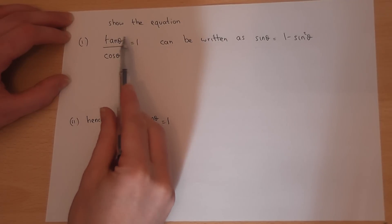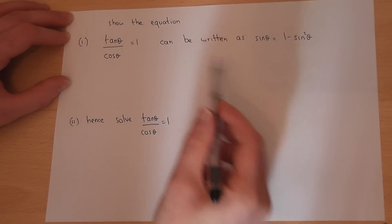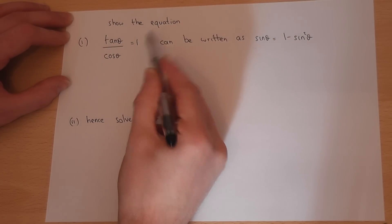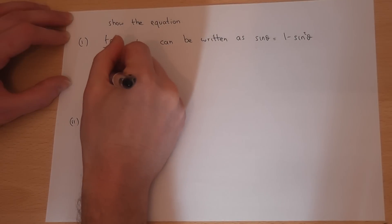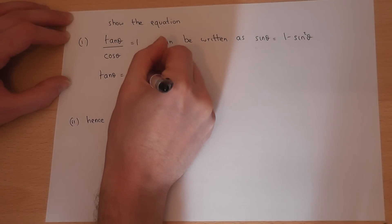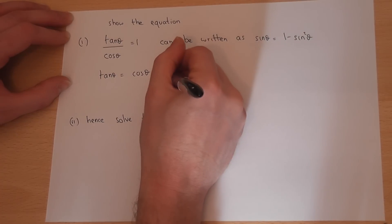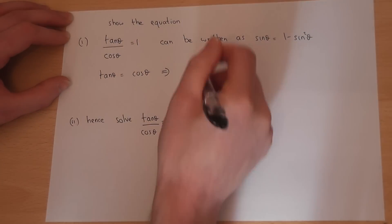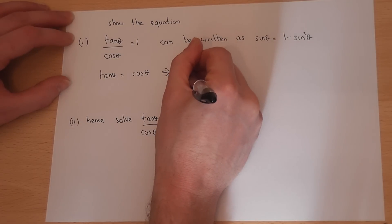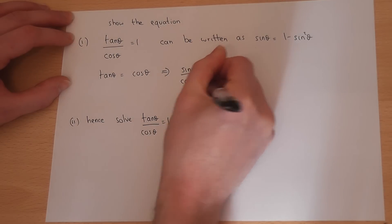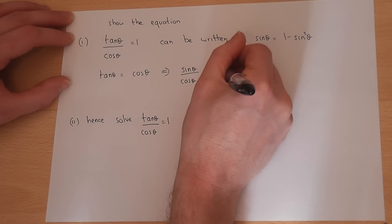Now if we look at the given equation, if I multiply by cos theta, I will end up with tan theta equals cos theta. So I've cross-multiplied. Now then, we know that tan theta is defined to be sine theta over cos theta. So sine theta over cos theta equals cos theta.